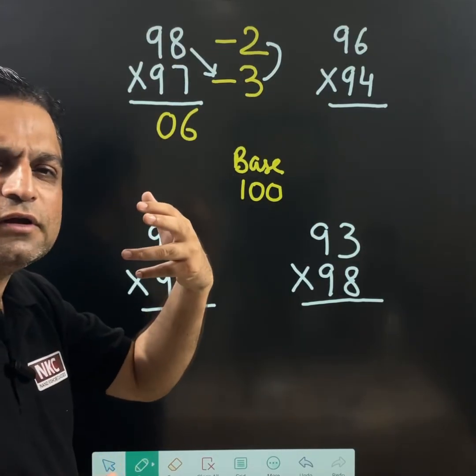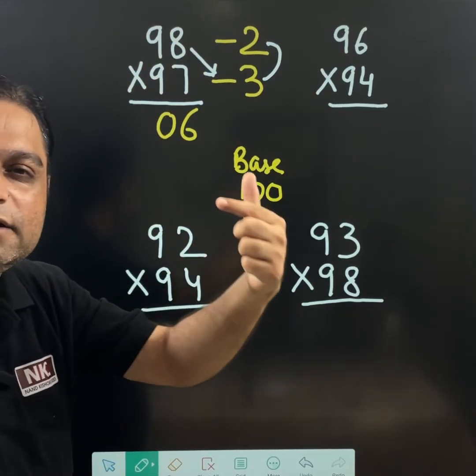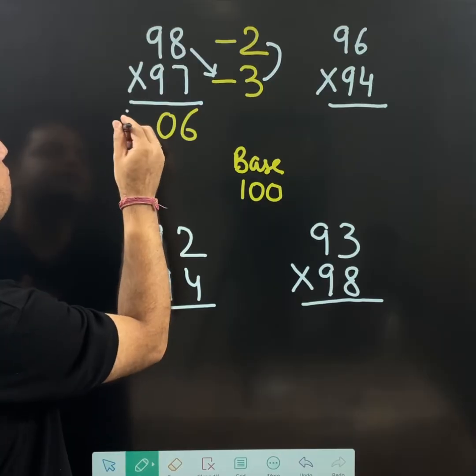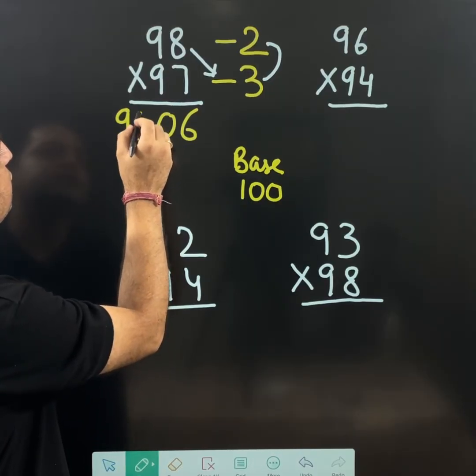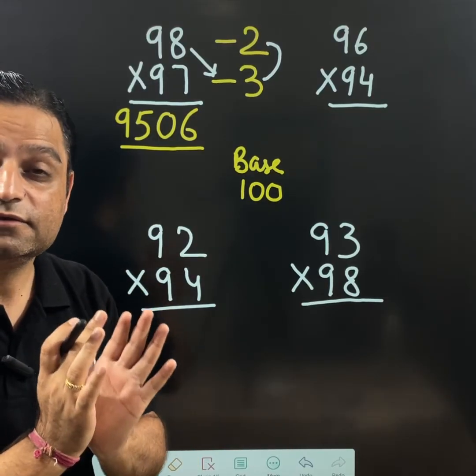This is the first step and then just put a cross here. It is for our own knowledge. 98 minus 3. Do the calculation. What is 98 minus 3? 98 minus 3 is 95. So your answer is 9, 5, 0, 6. This is the multiplication.